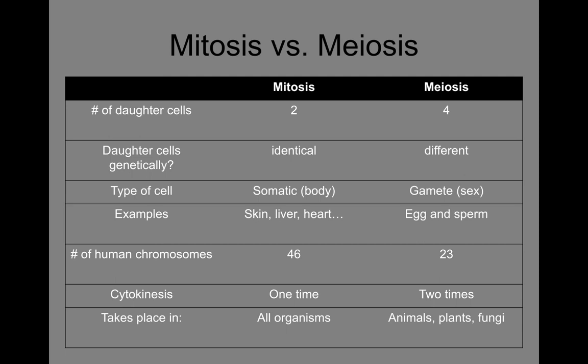In meiosis, we're going to have four cells that are all genetically different — different from each other and slightly different from the parent cell as well. These four cells are called gametes, sex cells, sperm cells and egg cells. These cells all contain 23 chromosomes; they are haploid. This is possible because cytokinesis happens two separate times. First one cell splits to become two cells, and then those two cells each split again — two plus two is four. So we're creating four genetically different haploid cells called gametes.